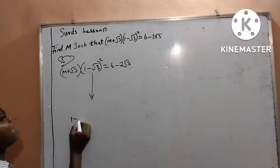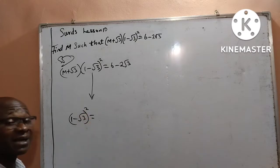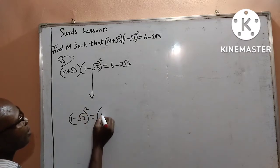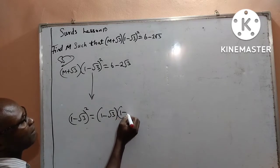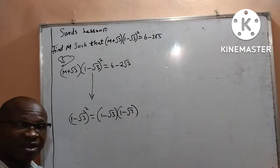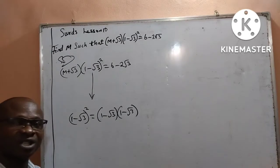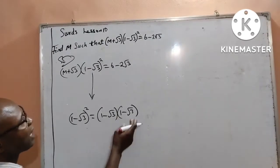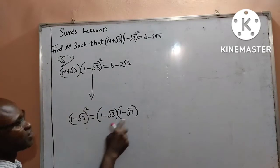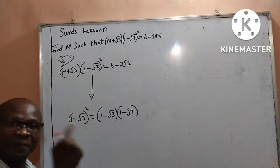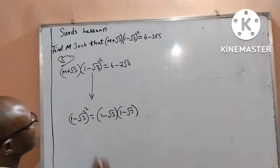From the left-hand side, 1 minus root 3 raised to power 2, I can write it as 1 minus root 3 into 1 minus root 3. That is what it means. By raising it to power 2, I can express it into 2 times. Then I can open the brackets to see what this results in.